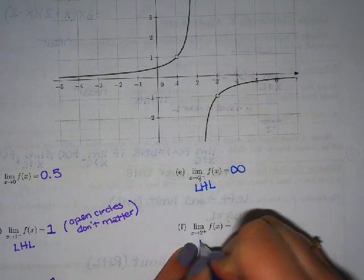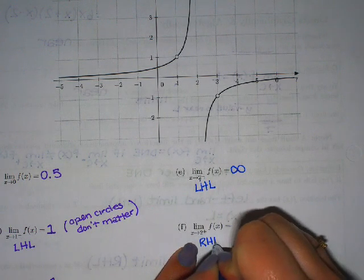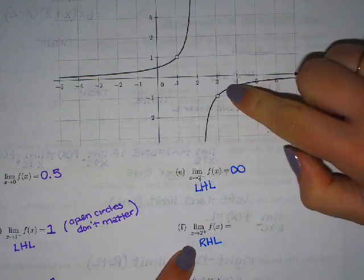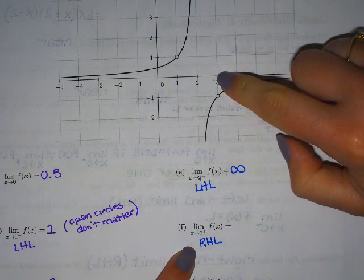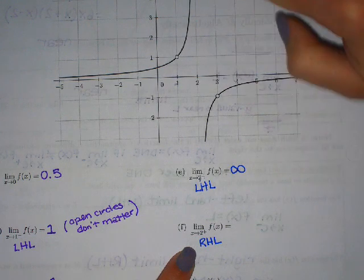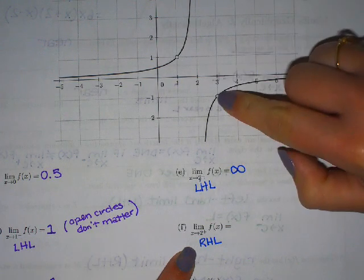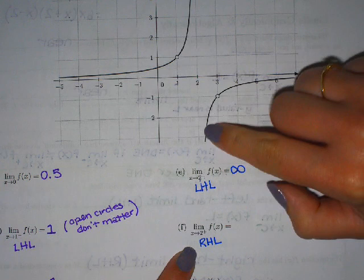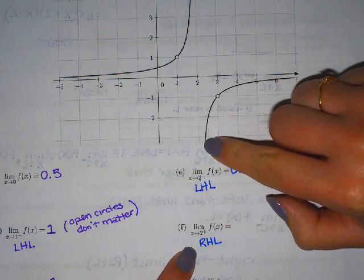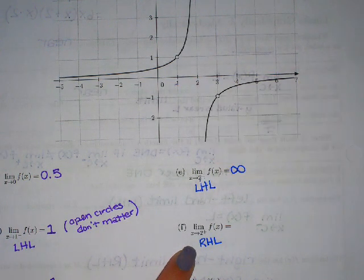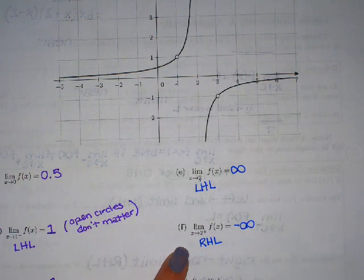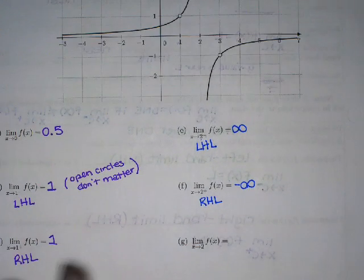Now let's compare that to the right-hand limit as x goes to 2 from the positive side, and see if we get the same thing. To the right of 2, maybe at x equals 3, there's no graph above — it's below. So we're going to follow in from this right side, and as we follow in towards 2 from the right side, we go down without bound. We're going to assume it's going down to negative infinity.